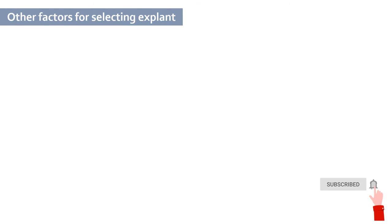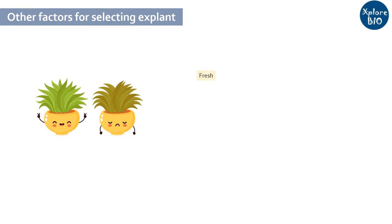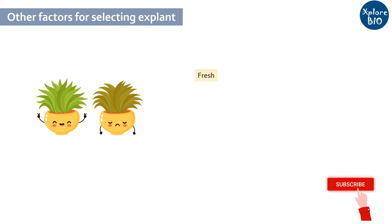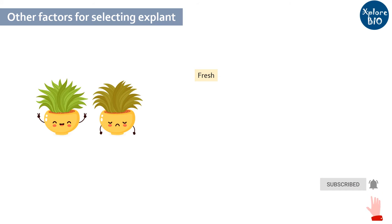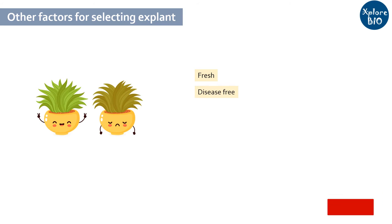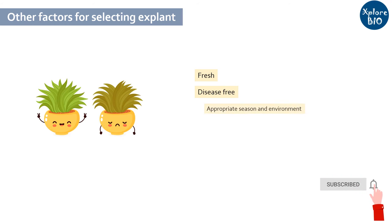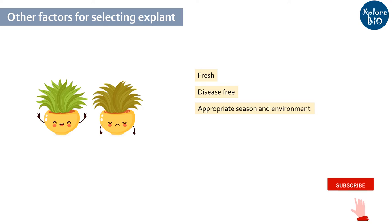Some things to keep in mind while collecting explant: the explant should be fresh and young tissue, not too old, as this affects regeneration efficiency. The explant should be disease-free. Nodal explant and meristem tissue should be collected in the proper season when there is low environmental stress and when tissue growth is vigorous.